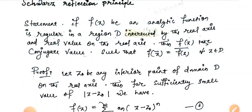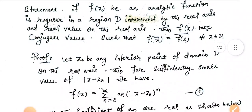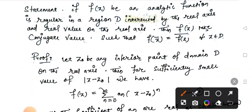What we have to prove is that f(z̄) equals f(z) conjugate for all z belonging to D. To begin the proof, let us fix a point z0 in the domain D.